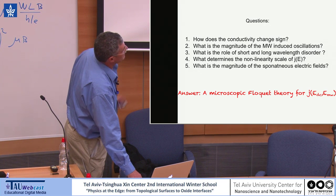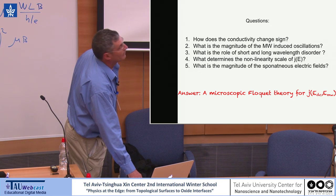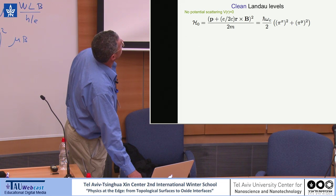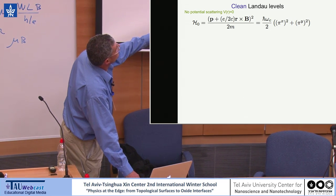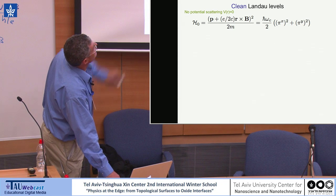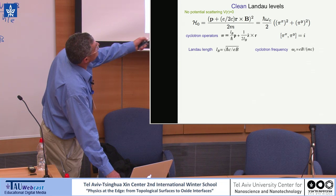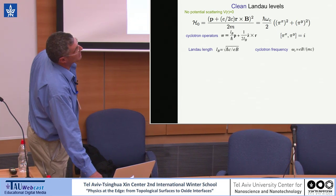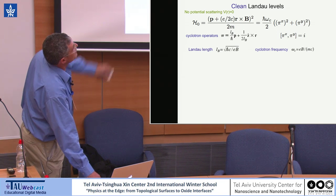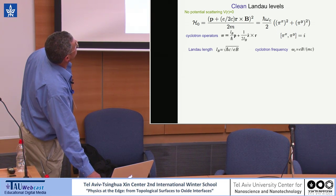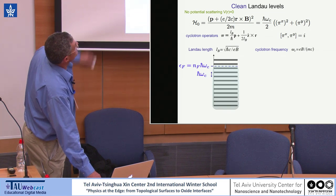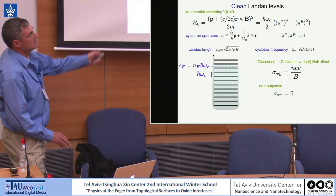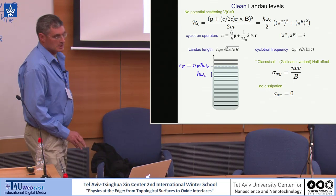To remind you: clean Landau levels have Landau operators pi_x and pi_y defined by kinetic terms, commuting to give i — it's essentially a harmonic oscillator with frequency h-bar omega_c. That's why you get integer-spaced Landau levels. If you calculate the Kubo formula for the conductivity, it's the classical result NEC over B, with absolutely no dissipation. If you want to add disorder, there's a technical difficulty because of the degeneracy of Landau levels — perturbation theory is very difficult with degeneracies.